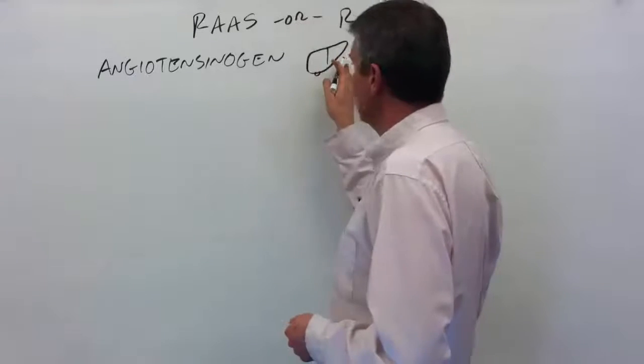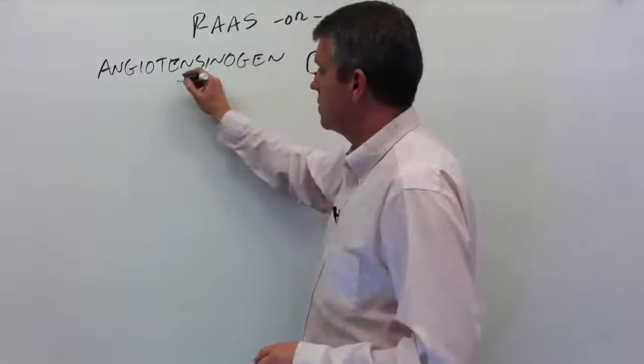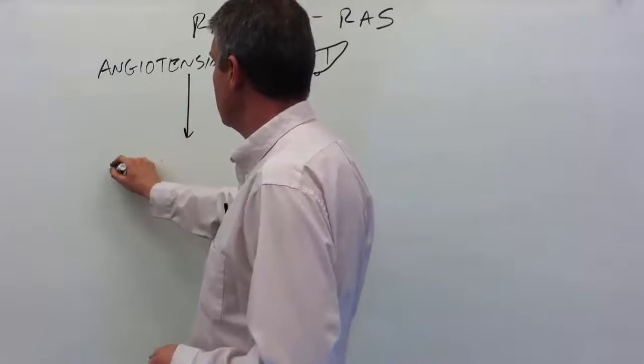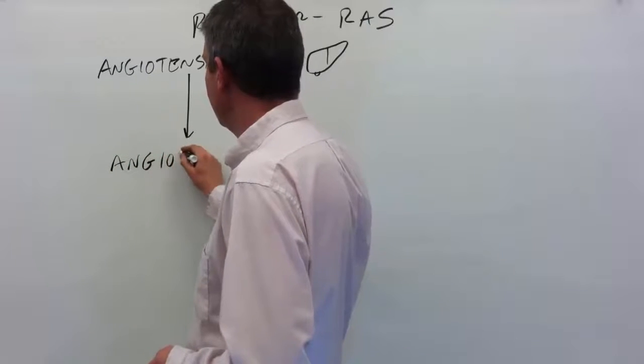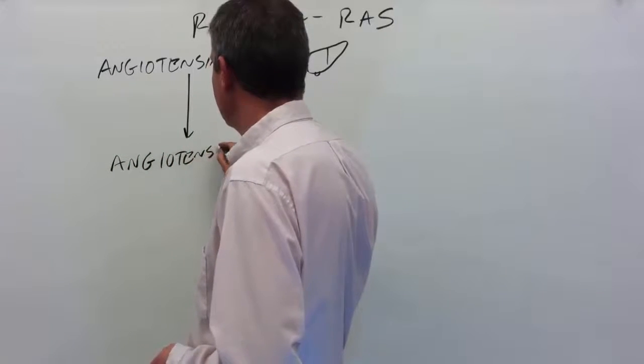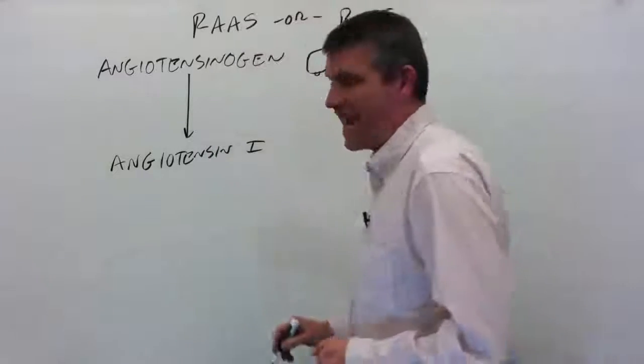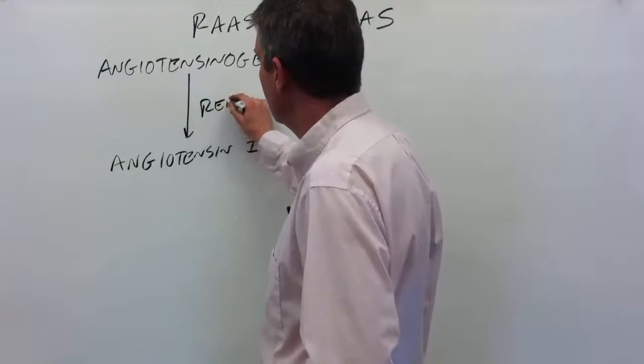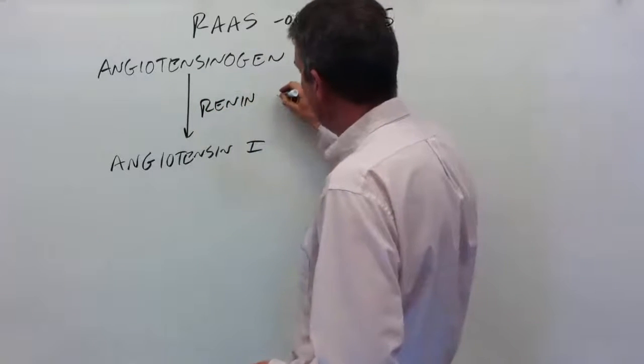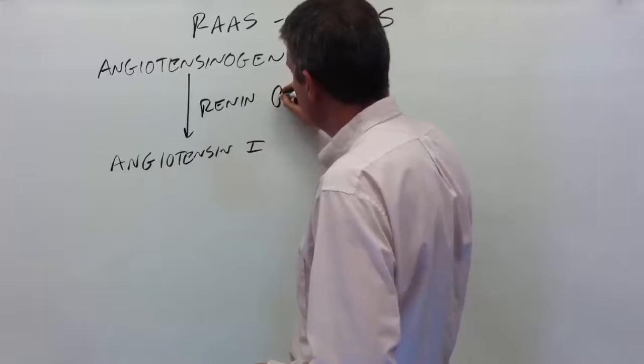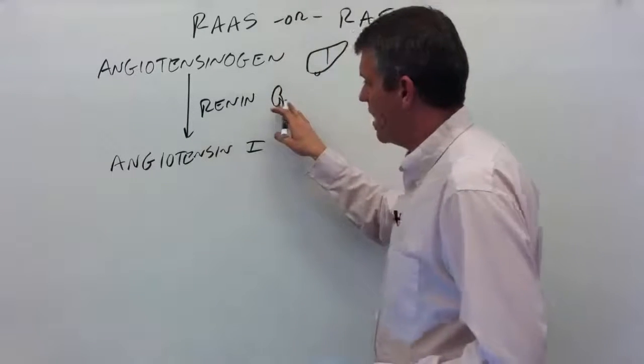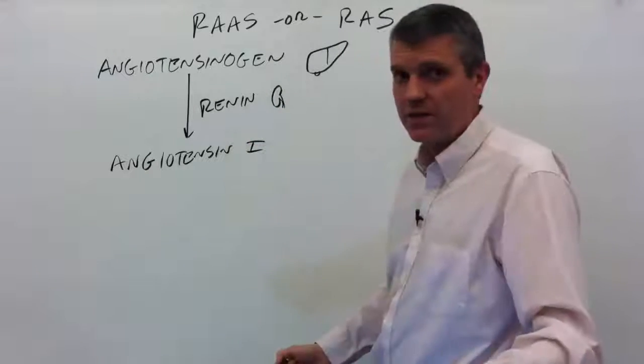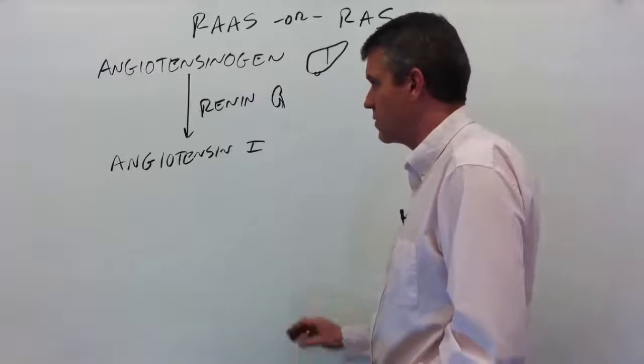The liver makes angiotensinogen. Angiotensinogen is converted into angiotensin I by an enzyme called renin, and renin is made by the kidneys. The kidneys make renin in response to low blood pressure. So this whole system really is about increasing blood pressure, helping to control blood pressure.